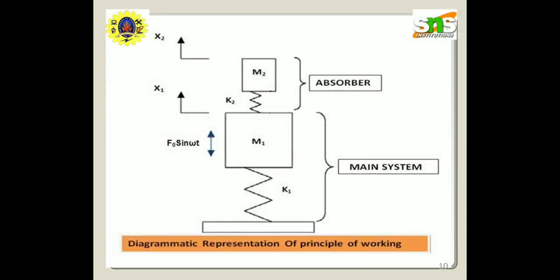This is a small diagrammatic representation of the working principle. The absorber and main systems are connected with springs indicated as k1 and k2, where k2 is the spring coefficient. The forcing function is represented as F·sin(ωt), and x1 and x2 represent the displacements of the primary and secondary systems respectively.